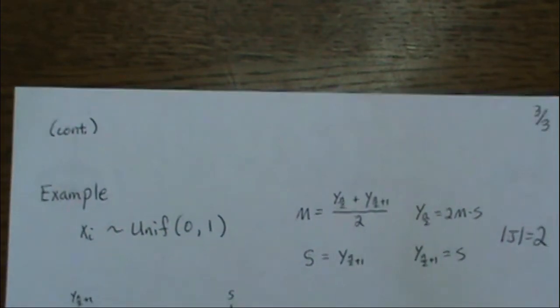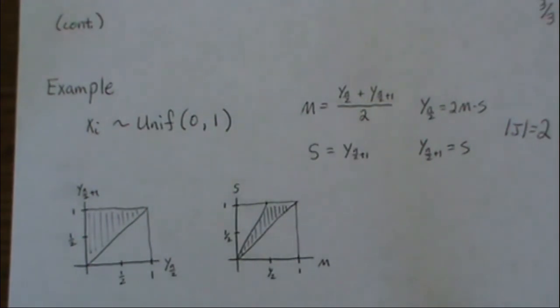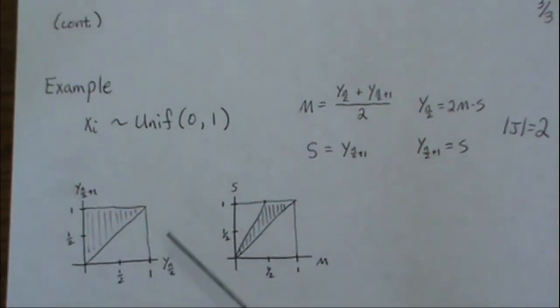Jacobian's 2. So this is the same as before. Now our limits of integration are a little different. Now our order statistics, since we're on the uniform, only go from zero to one.